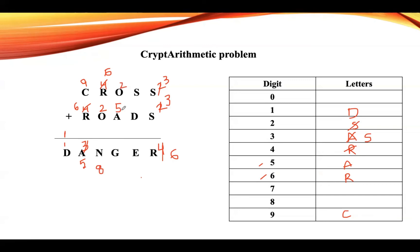Now add two plus five, which gives seven, and seven is free so assign seven to G. If we considered carry, two plus five plus one gives eight, but eight is already occupied, so no carry. S is already three. Now for E: D is one, so three plus one gives four, and four is not assigned to any letter, so assign four to E.